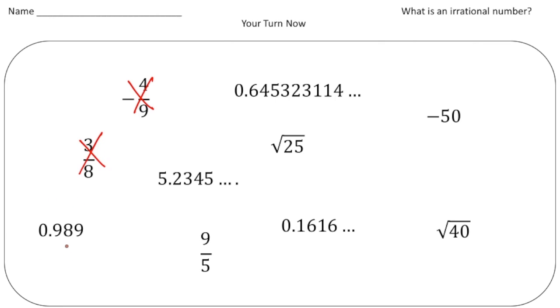Now this decimal terminates, so it stops, so that makes it rational. Here we have the fraction 9 fifths, that's a fraction so that's rational. Over here we have negative 50 which is really negative 50 over 1, so this is rational.